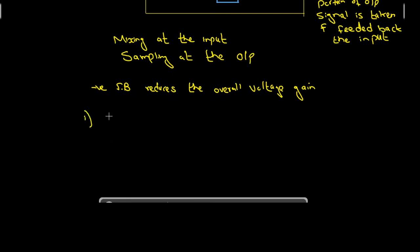The first improvement is input impedance. By applying a negative feedback network, input impedance is improved and made very high. We need high input impedance to get all the voltage from a source to a target without any loss. So that is why we prefer high input impedance.